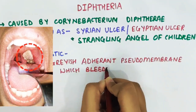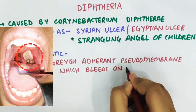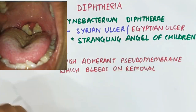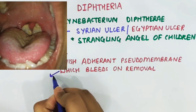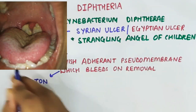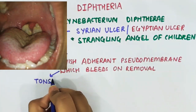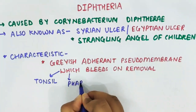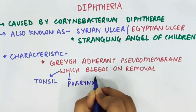This membrane develops initially on the tonsils, and from there it progresses to involve the pharynx, from where it involves the trachea and larynx.